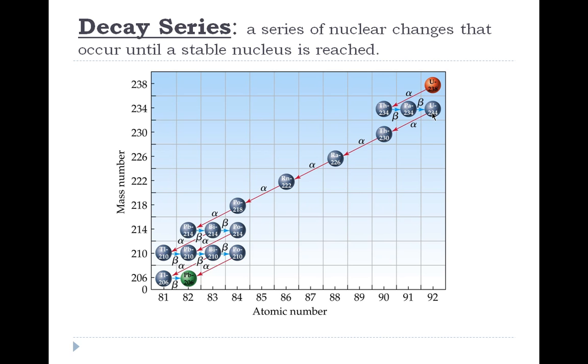It turns into palladium, releases another beta particle, turns into uranium, releases an alpha particle, turns into thorium, on and on until finally a stable nucleus is reached, which is lead-206. That is the essence of that comic.